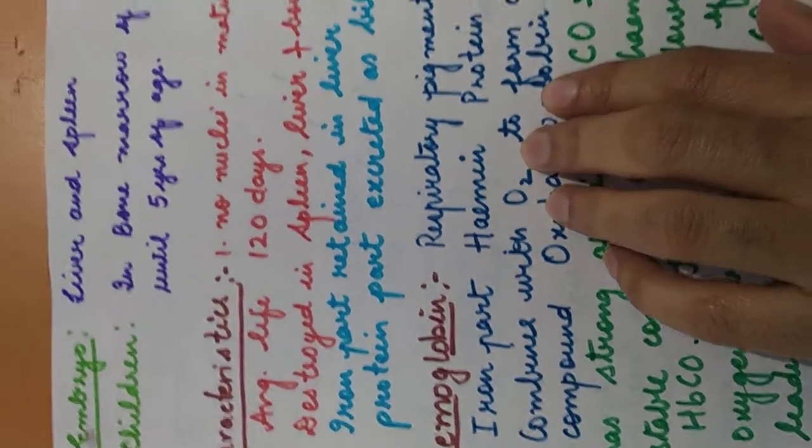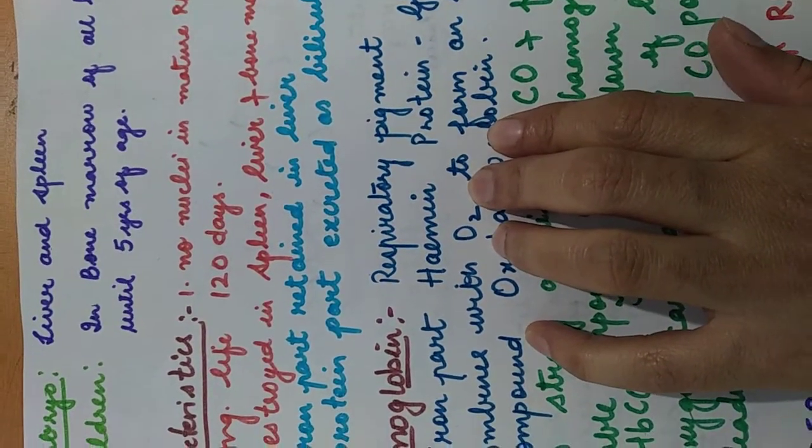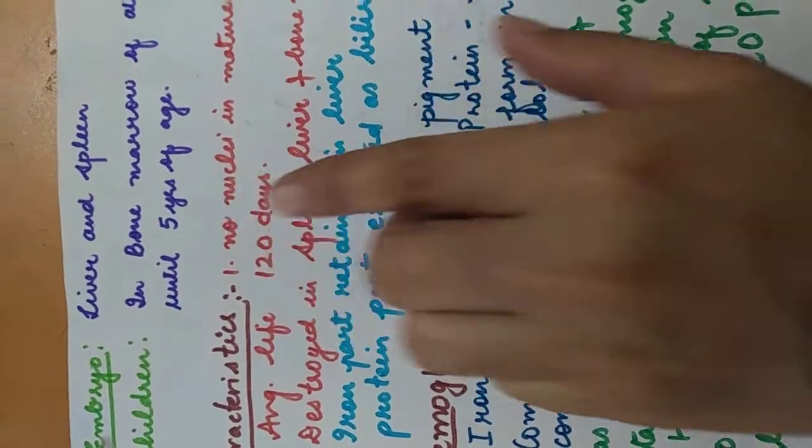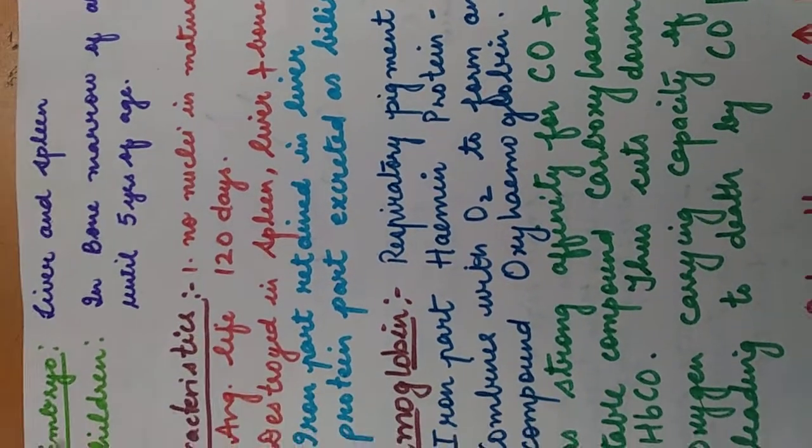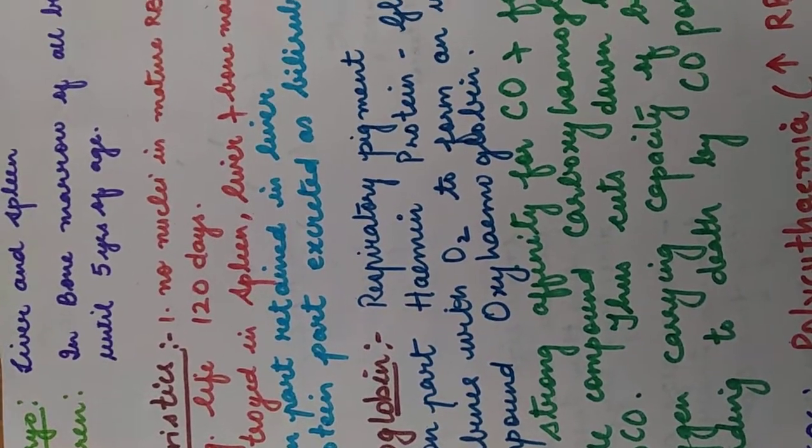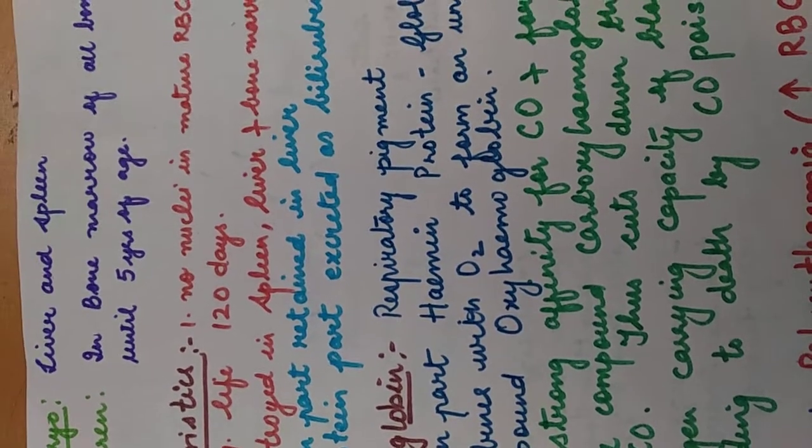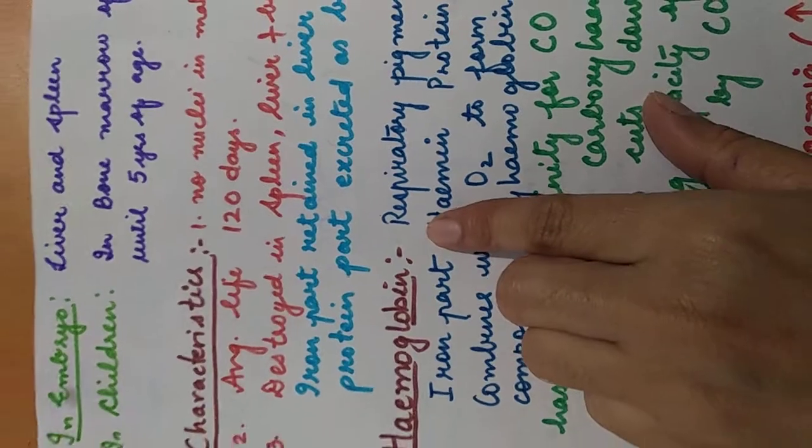Now if we talk about children, in bone marrow of all bones until 5 years of age. So up to this 5 years of age, in all the bones, all the bone marrows, the RBCs, they are produced. And in adults, it just then ceases to the bone marrows of the long bones, as we have discussed earlier.